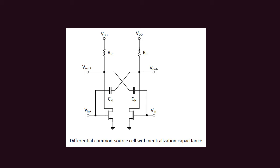What we do in this neutralization capacitance technique is we connect a capacitor between the input of one device and the output of the other device. Therefore it is known as cross-coupled. It is not between the input of one and the same output of that transistor - it is cross-connected between one transistor and the other transistor.